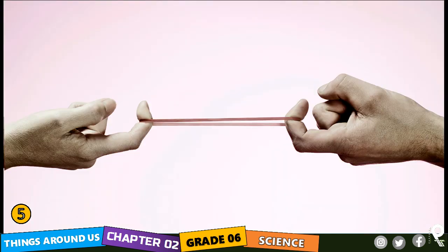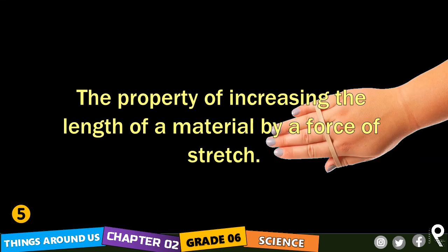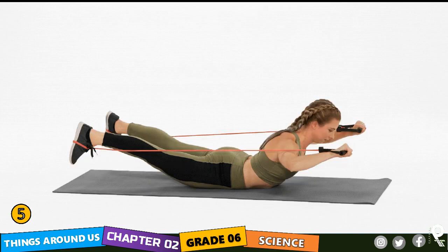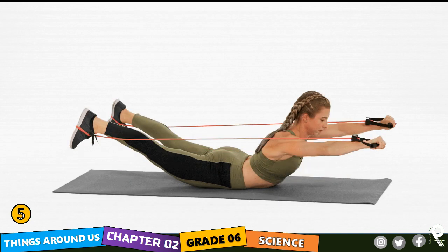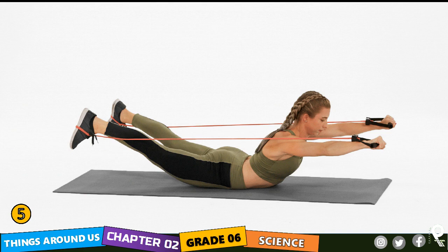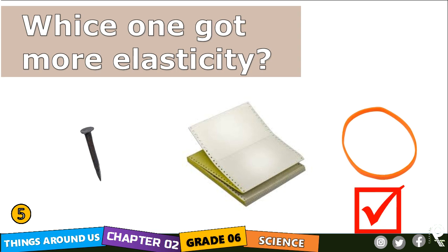In rubber there is elastic nature — that's the fourth property. The property of increasing the length of a material by a stretching force is elastic nature. You can stretch rubber and elastic, and that's why they are used in gyms for stretching exercises. Elastic nature is not common to all solid materials. Out of an iron nail, paper, and a rubber band — which one has elastic nature? It is rubber.